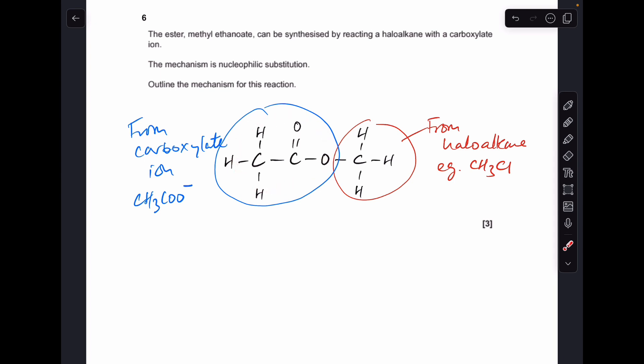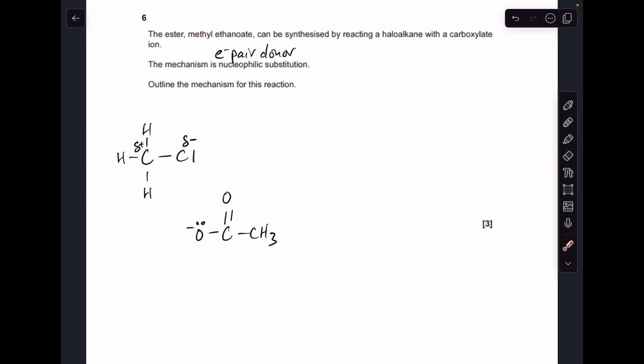There's only one option you can go for there - it's got to be an ethanoate ion. Moving on to the mechanism itself, we're told it's nucleophilic substitution, so it involves the donation of an electron pair.